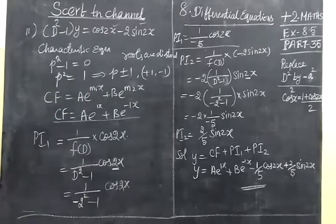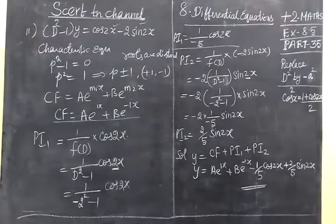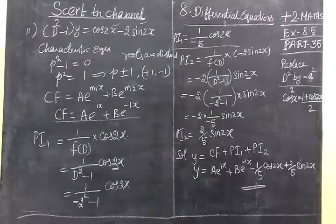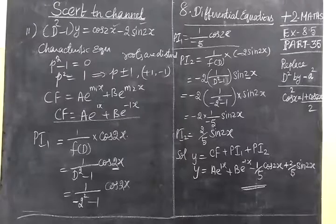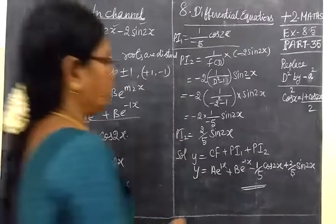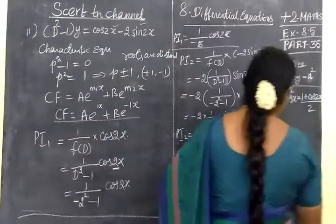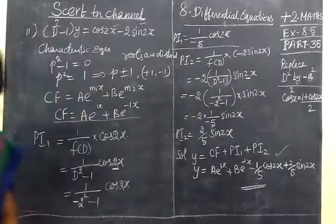We can verify the answer: y = Ae^x + Be^(-x) - 1/5 × cos2x + 2/5 × sin2x. This is very simple. Please go through it. Thank you.